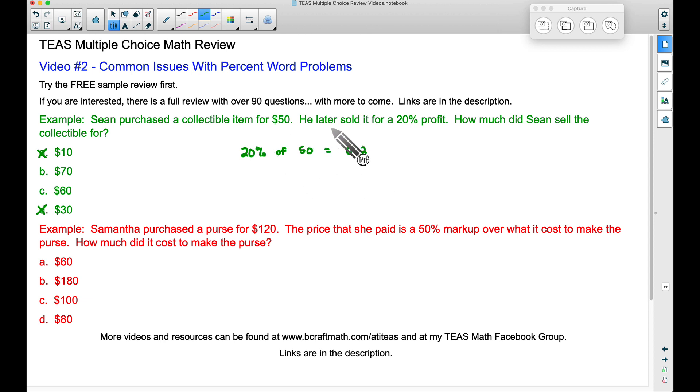I'm converting the percent to a decimal. Of means multiply $50 and 20% of $50 is $10. Huh check that out. $10, that was one of our answers.